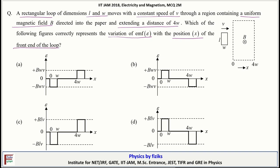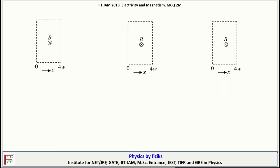So in this case, let us consider three different cases. So this is case 1. In case 1, assume at t is equal to 0, front end of the loop is at x is equal to 0. So this L and this is W.